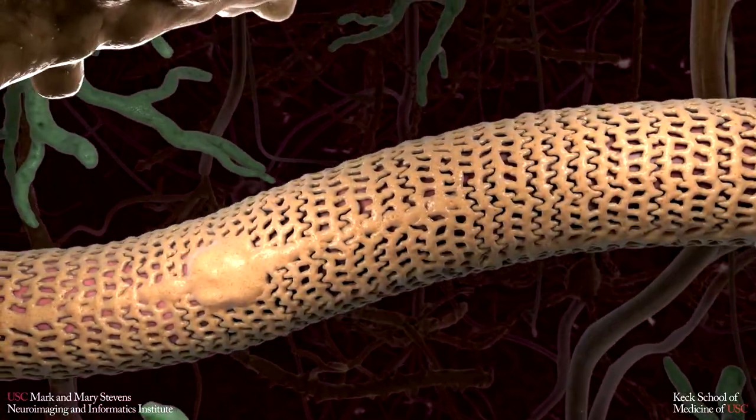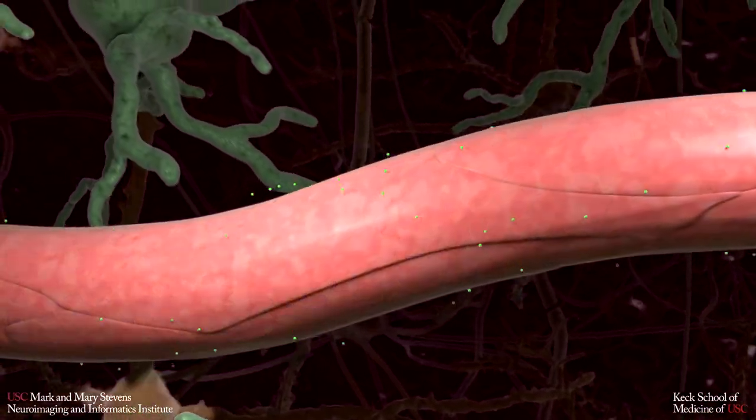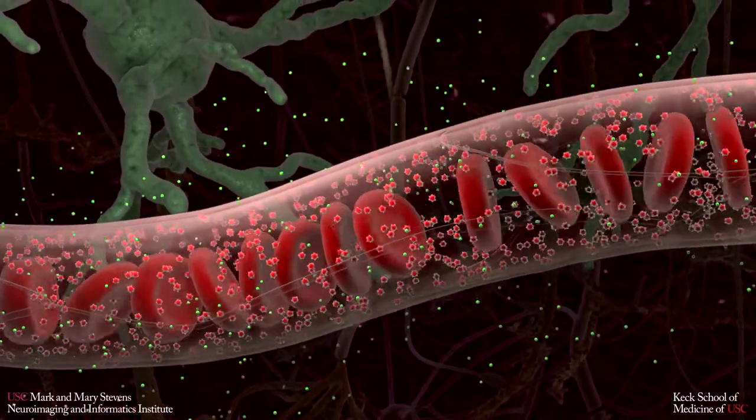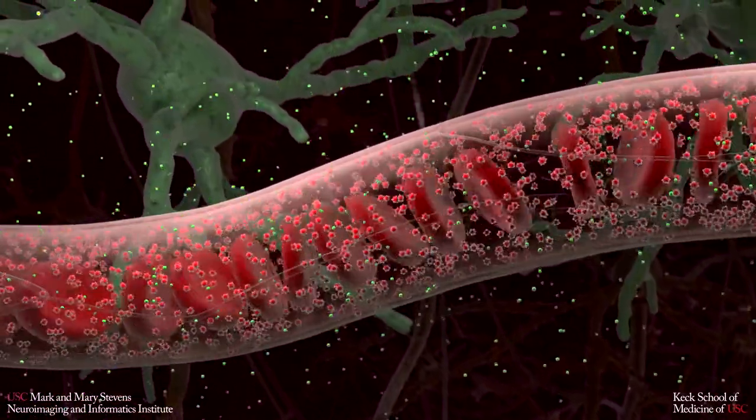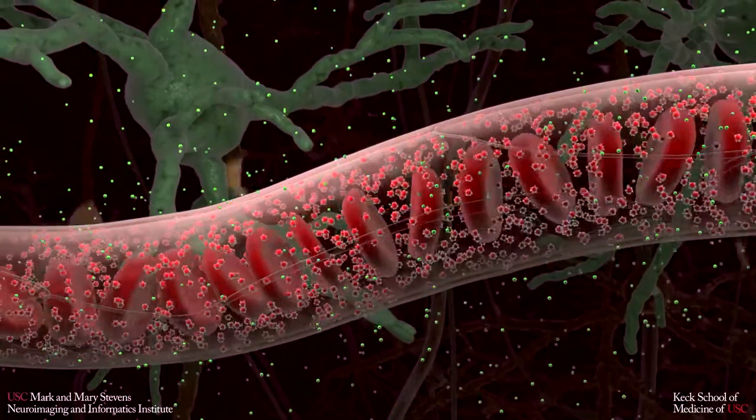This barrier allows some substances to pass through into the brain while keeping blood and harmful substances inside the blood vessels. The barrier is made up of several components.